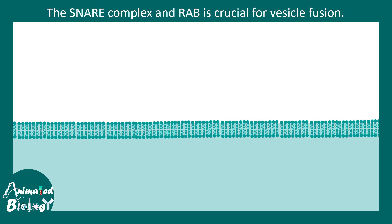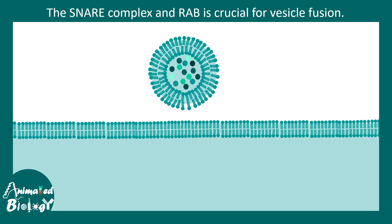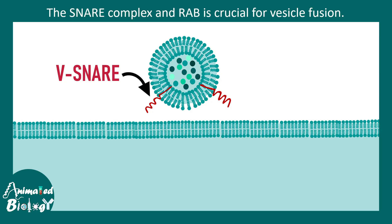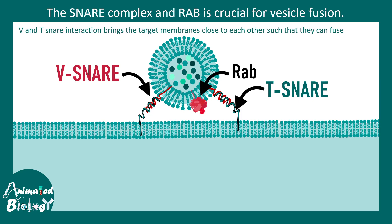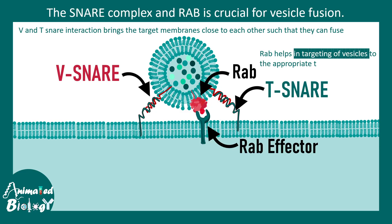Now let us understand how the SNARE complex and RAB are crucial for vesicle fusion. Here is a vesicle that is about to fuse to a target membrane. Two components are required for tethering and fusion: the SNAREs — vesicle-bound V-SNAREs and target membrane-bound T-SNAREs — and also RAB proteins. RAB and its RAB effector act as an important molecular matchmaker that dictates the targeting of a vesicle to a particular membrane.